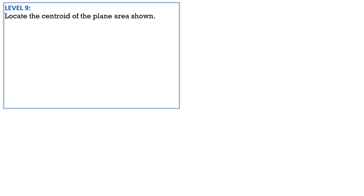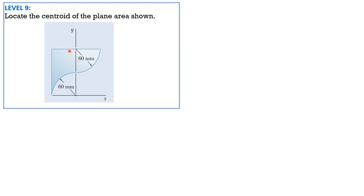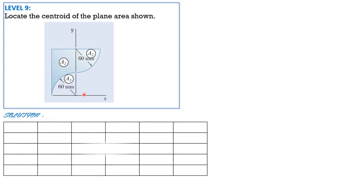Level 9 problem: locate the centroid of the plane area shown. We treat this as a rectangle plus a quarter circle minus a quarter circle. Call the rectangle area 1, the added quarter circle area 2, and the subtracted quarter circle area 3. Area 2 and area 3 are equal in size — one is added and one is subtracted. Let's tabulate: element, area in mm², x sub c in mm, y sub c in mm, area times x sub c, area times y sub c.